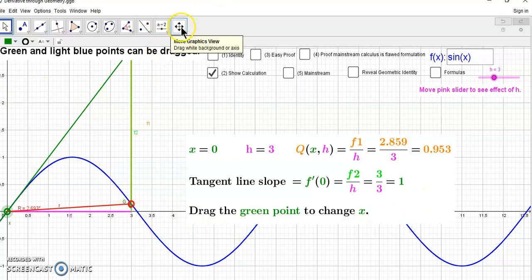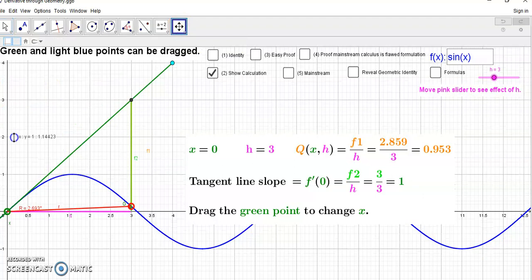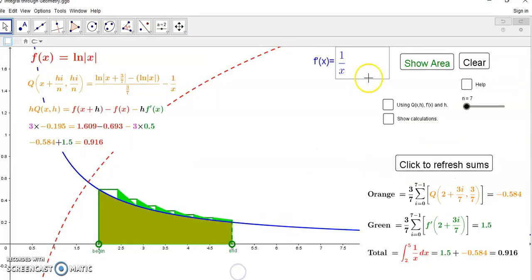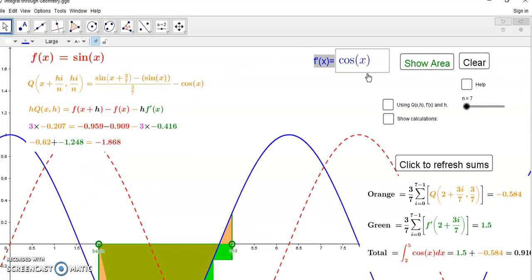This will give you the same results as your mainstream calculus because it's based on that flawed Newtonian non-parallel secant approximation. As you'll see the tangent line there is one and we're doing it from zero to three. We know this is cos of x.